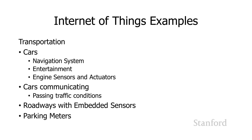Transportation is another area where we're getting more and more internet of things capabilities. In a car, the navigation system or entertainment system could be part of the internet — many of us just use our cell phones for that. There's also discussion on whether engines and actuators for controlling how the engine works should be part of the internet of things, though that raises security concerns and makes it a little easier to hack. Cars can also communicate with each other, like Waze does, where all the cars are talking to each other and can share traffic conditions — one could say it was just going across the Bay Bridge 15 minutes ago and you don't want to go that way.